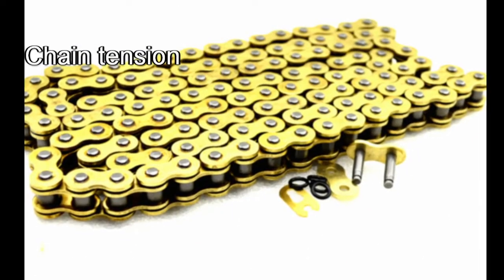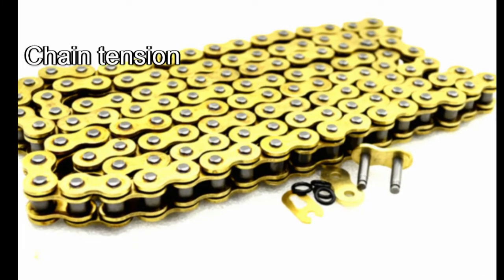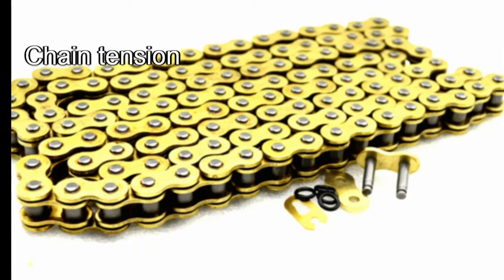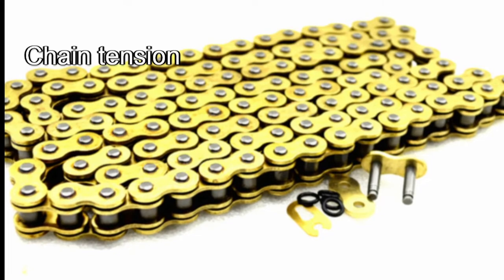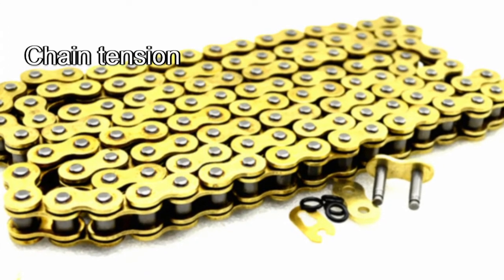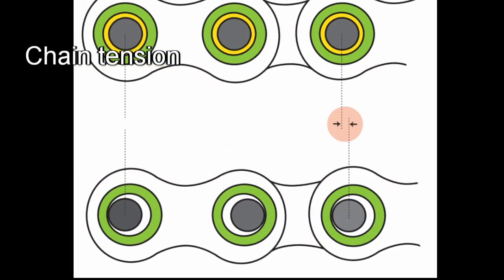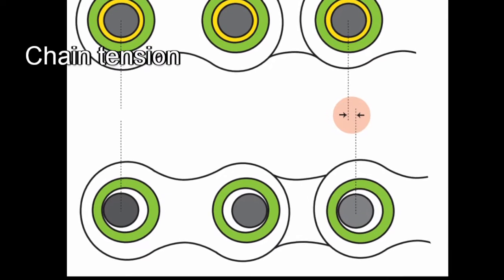As an example, if you had a hundred links in your chain, and every roller bushing, two per link, has just one one-thousandth of an inch worth of wear, your worn chain will be almost a quarter of an inch longer than a new chain.